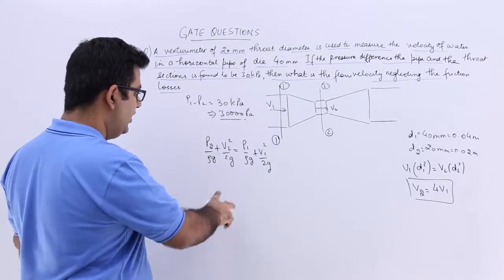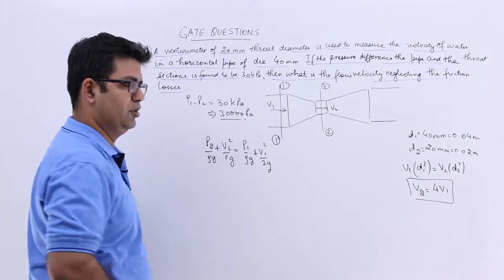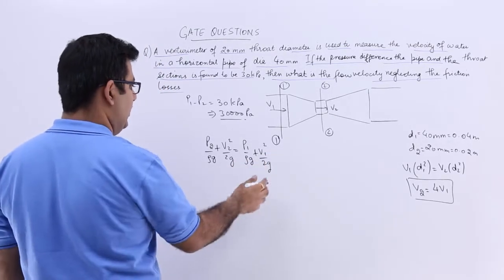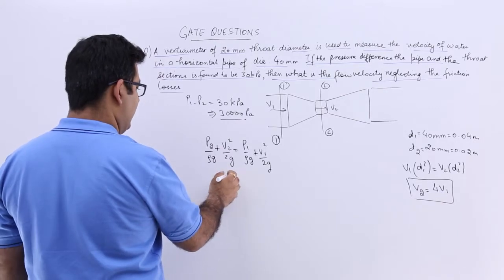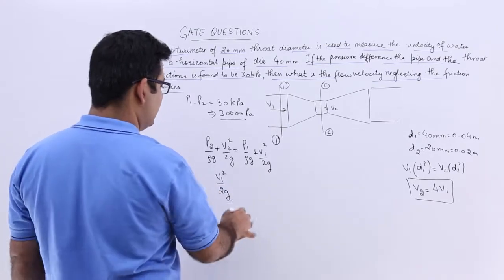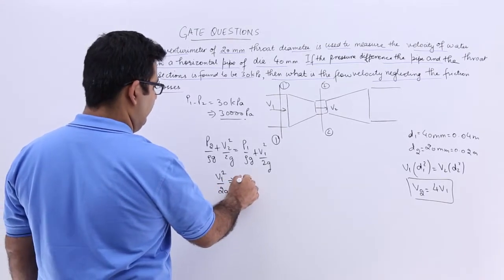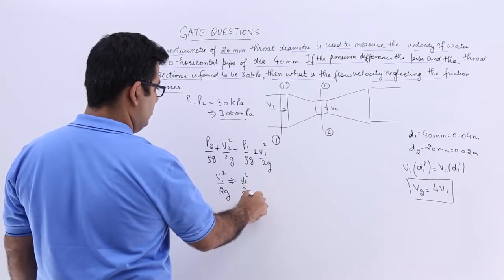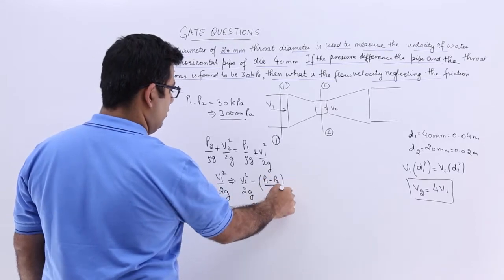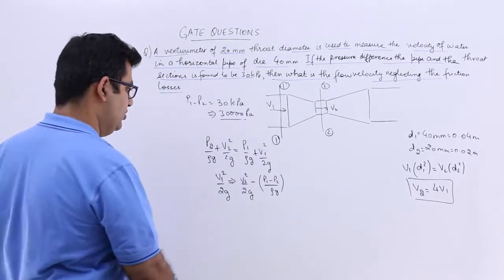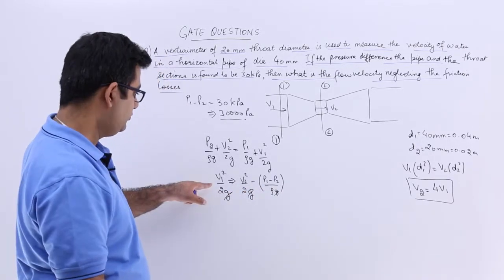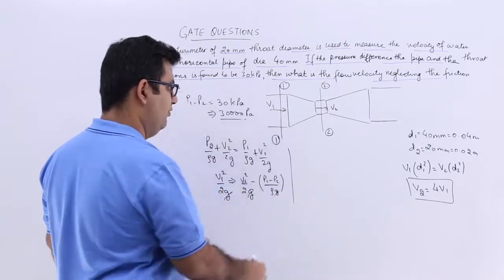So let us bring these two together and let us bring these two together. You have to find V1 basically. So I can write down that V1 squared upon 2g equals V2 squared upon 2g minus P1 minus P2 upon rho g. So I can easily strike off the g from here and then I will use the value to find out the value for V1.